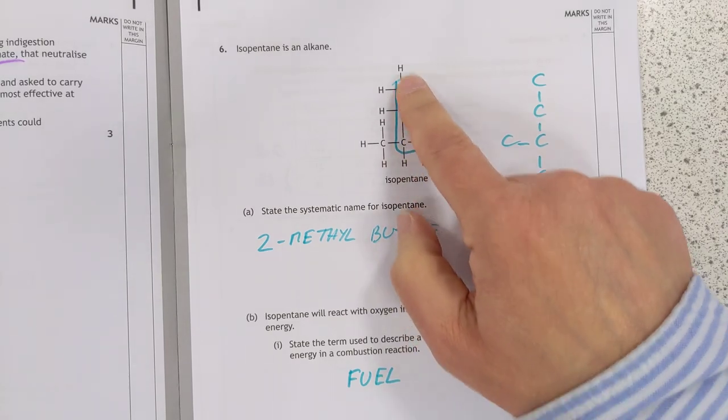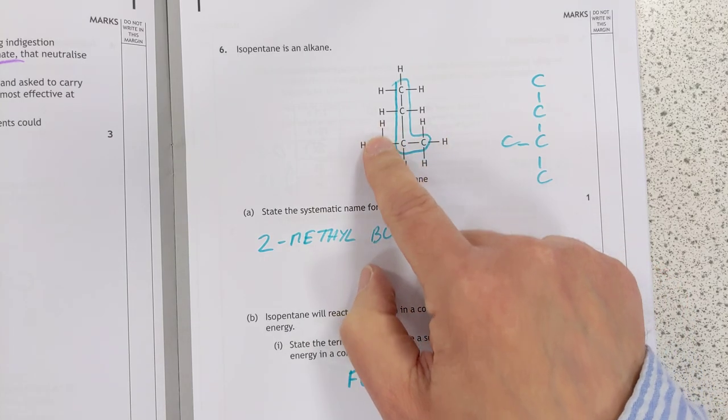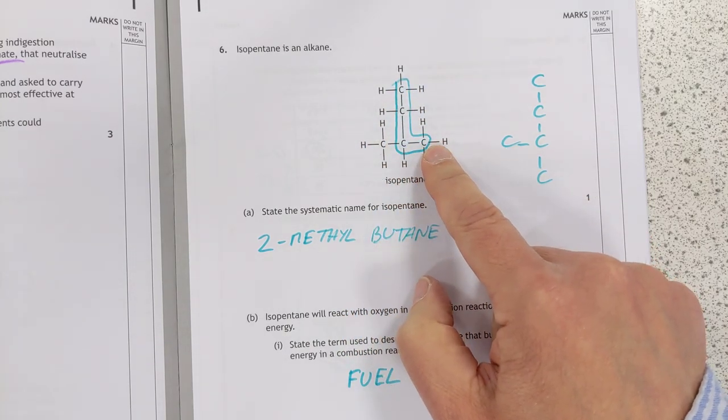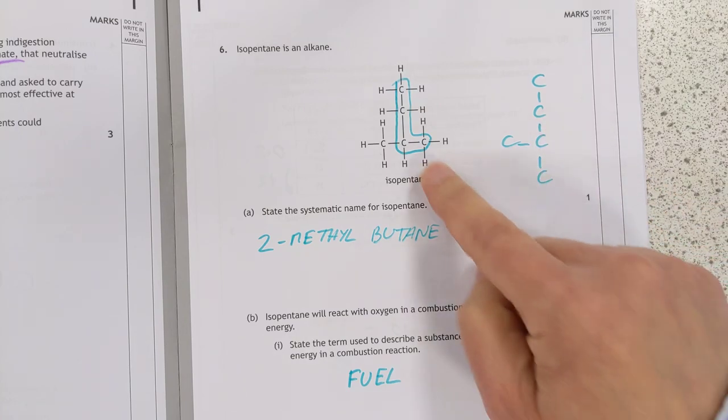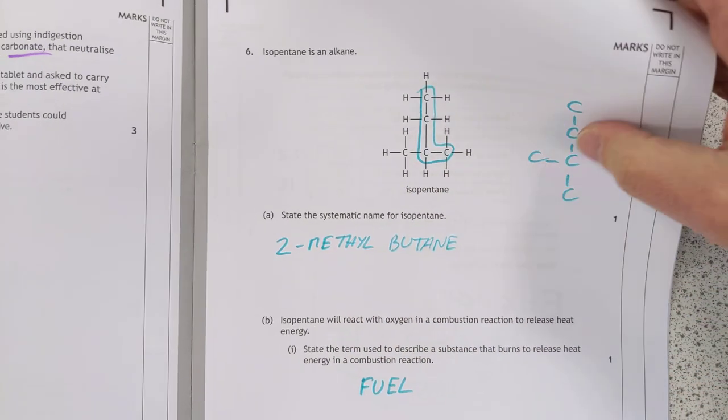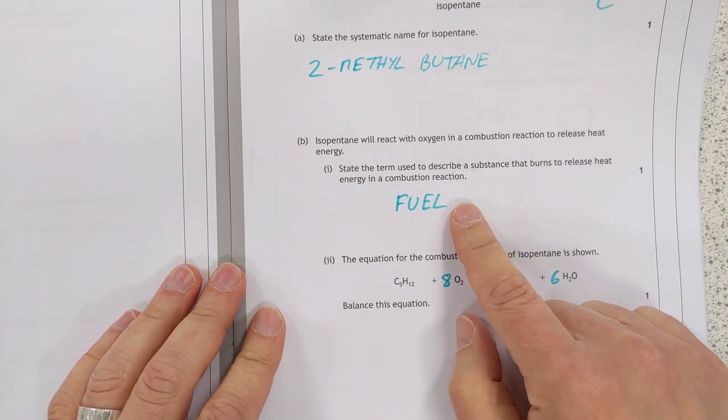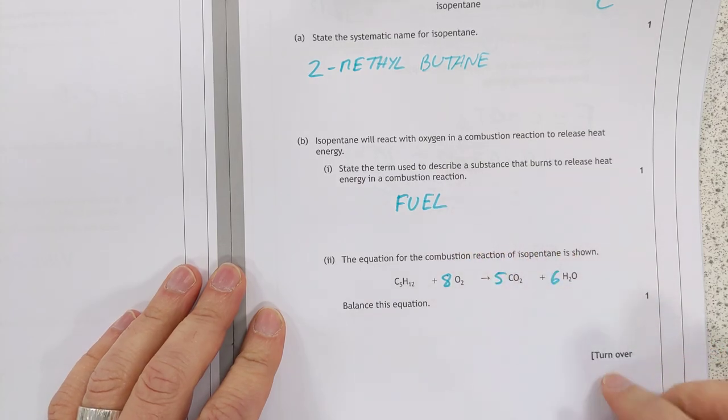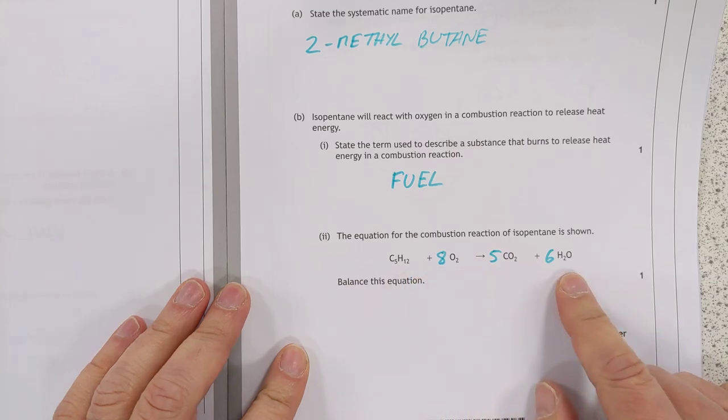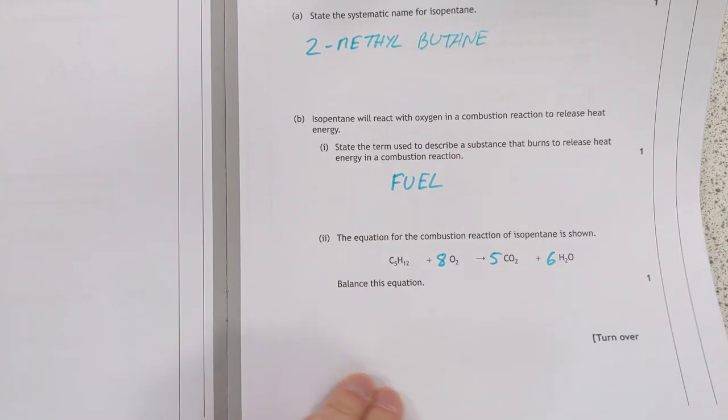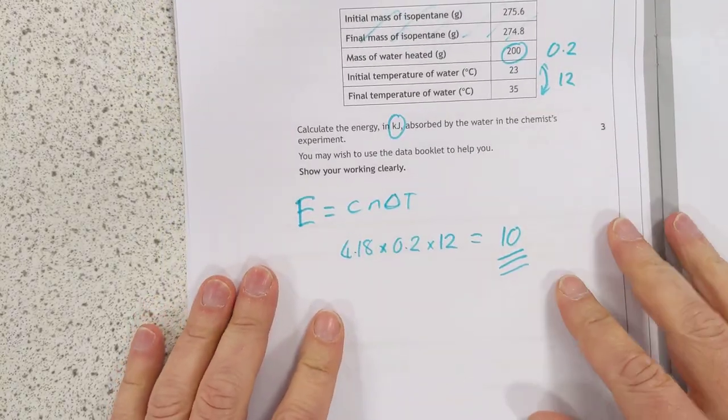2-methylbutane. Yeah, they're pulling the trick here. They're pulling the trick of drawing it confusingly. So it looks like you should just go with these three. But if you find the longest continuous chain, it's got four carbons in it. So I've redrawn it here, effectively, like that. Straighten that out. That is 2-methylbutane. Simple knowledge here. Substance that burns is a fuel, releasing energy. This is a tough one. Tough balancing one. Some big numbers in here. But these are the numbers that you should have got, guys.